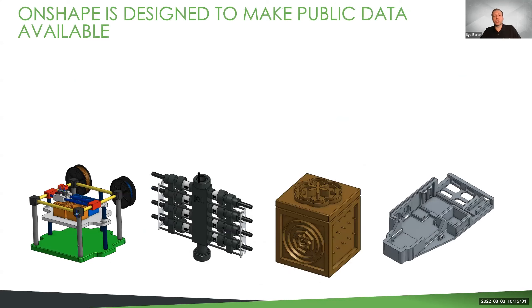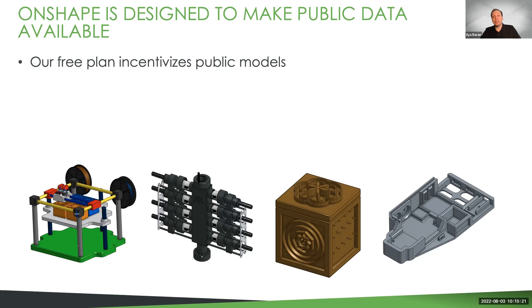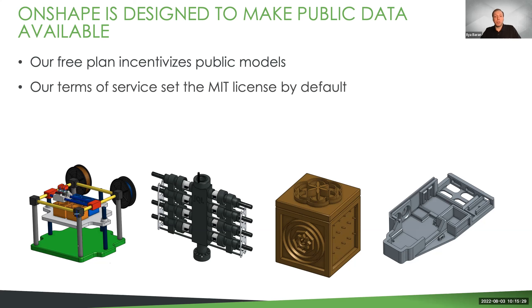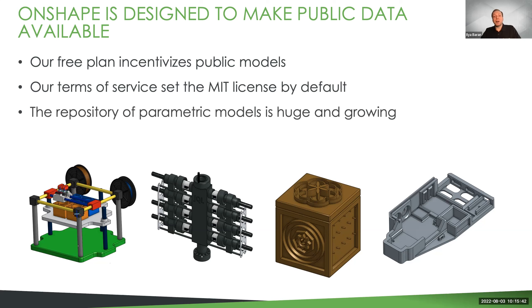From the beginning, we treated researchers as an important use case for our public data, and that's reflected in our design in several ways. Our free plan requires that all models you create be public. Part of the goal is to push professionals into a paid plan, but the flip side is to get free users to generate data — we use this data for debugging and you can use it for research. All free users have agreed that their public data is available under terms equivalent to the MIT license. So Onshape is a huge repository of free designs, including many good parametric models, and you can access them directly in Onshape or export them as a mesh or B-REP, either manually or via API.